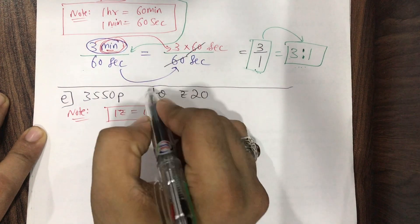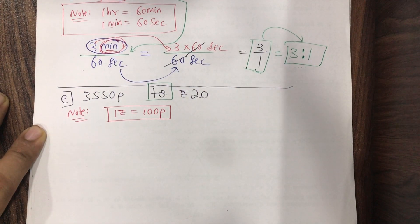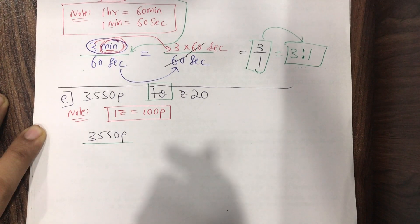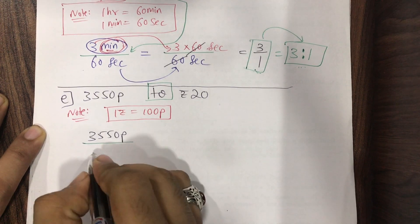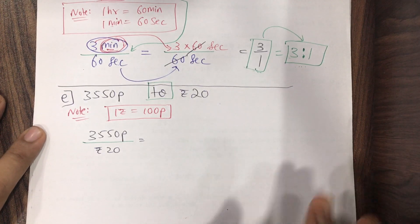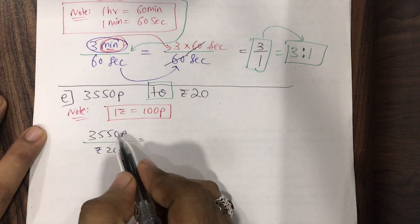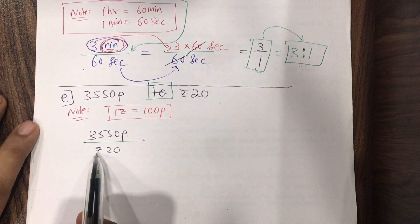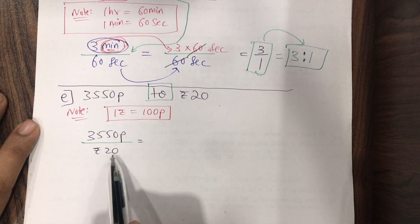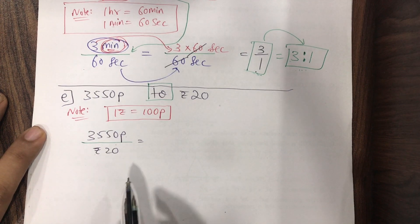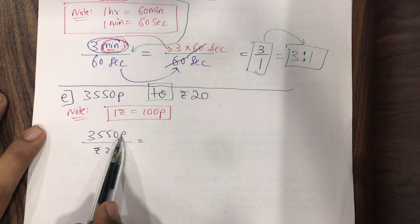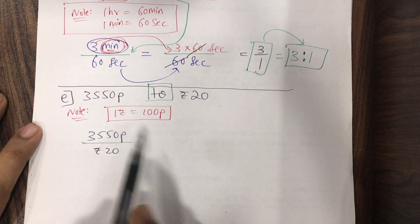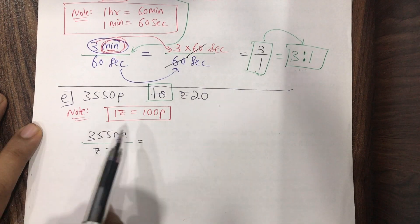Now I copy the question: 3550 paise upon rupees 20. But we can't cancel or simplify yet — in the numerator we have paise and in the denominator we have rupees. The basic rule is numerator and denominator must have the same quantities. Should I convert paise to rupees or rupees to paise? Same answer as before: convert to the lowest unit. Paise are the lowest, so I keep 3550 paise as it is.